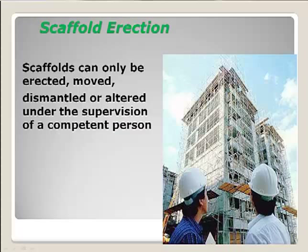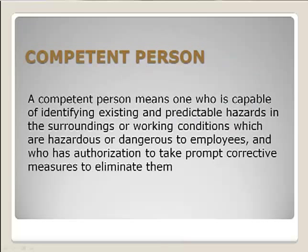Scaffolds can only be erected, moved, dismantled, or altered under the supervision of a competent person. The OSHA definition of a competent person is someone capable of identifying existing and predictable hazards in the workplace, who also has the authority to take prompt corrective measures to eliminate them. They know what a good scaffold looks like and have the authority to shut the job down and make sure any deficiency is corrected before the scaffold is used.